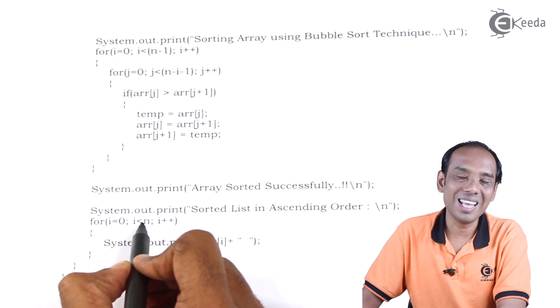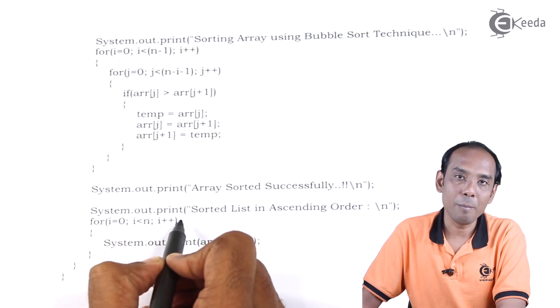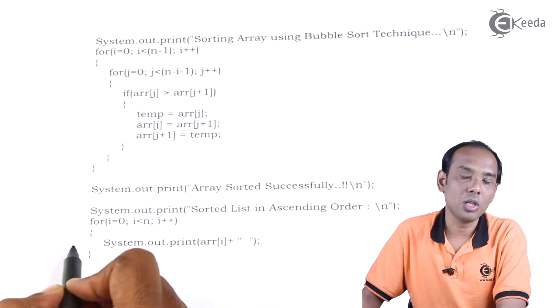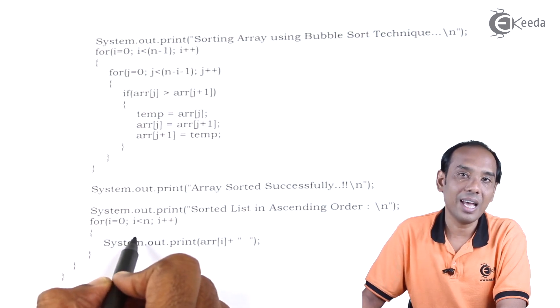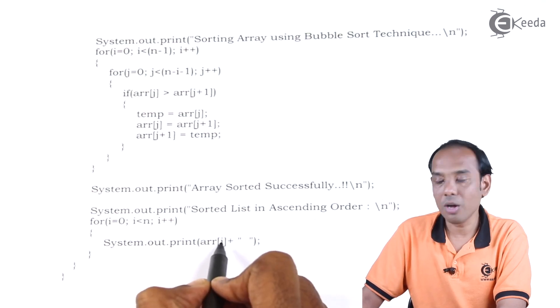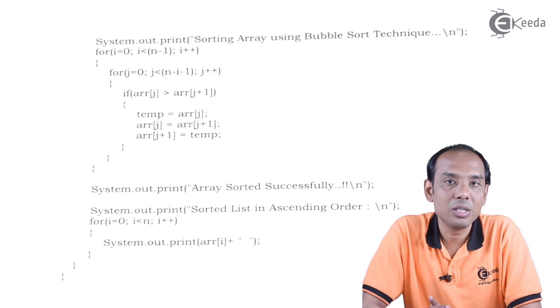For i equal to 0, i less than n, i++. Then we will display the elements in proper order. Now the order we have chosen is ascending order. Hence we write down system.out.print arr[i]. Like this we have sorted the elements.